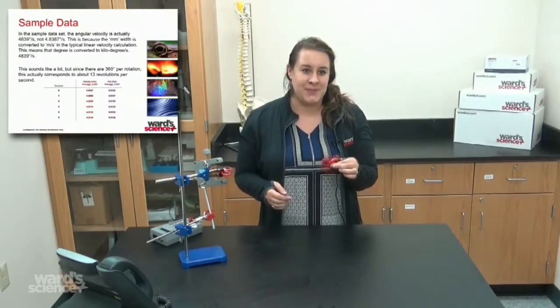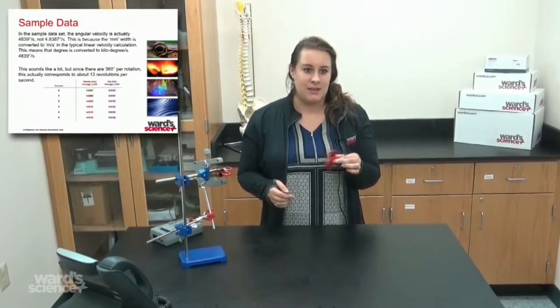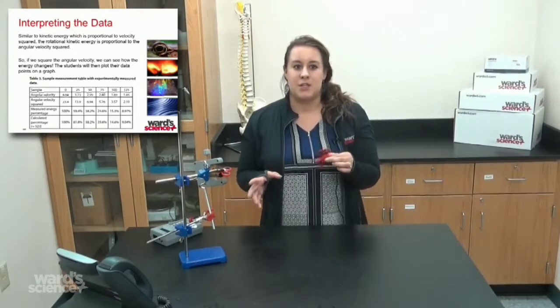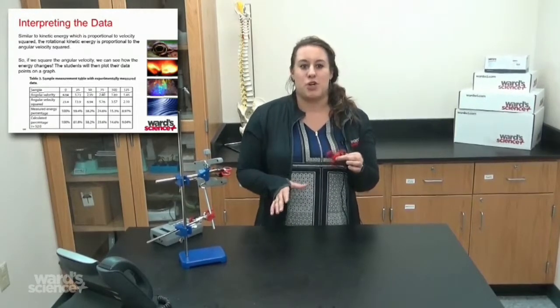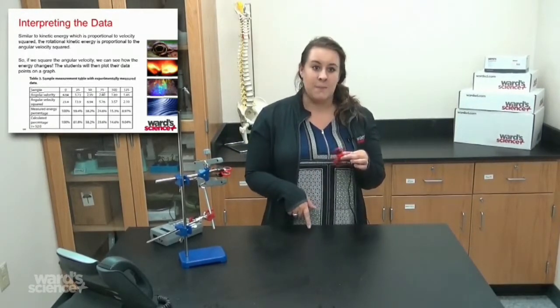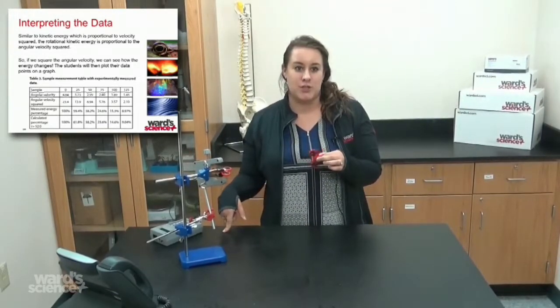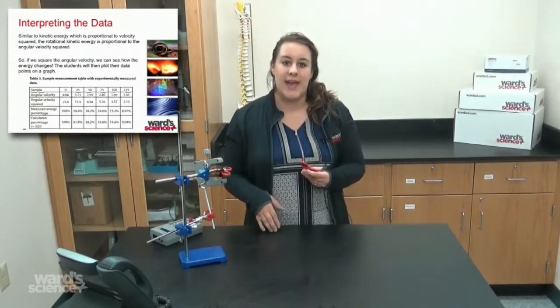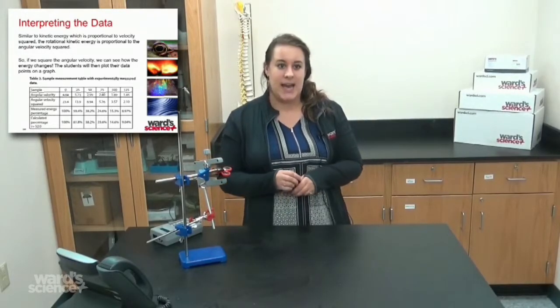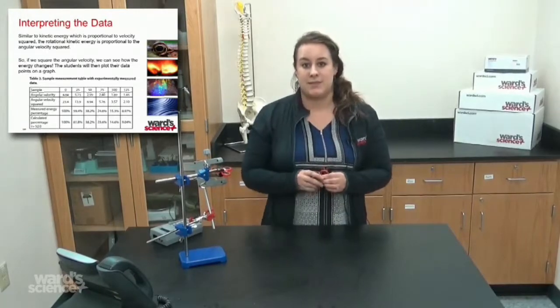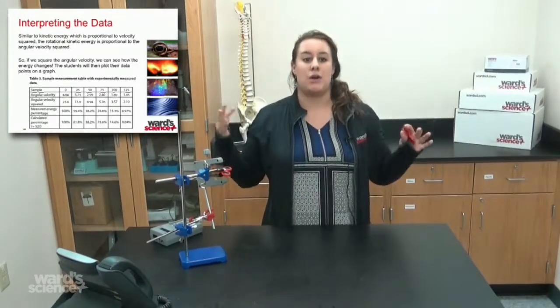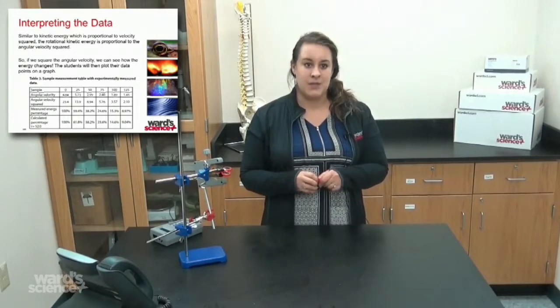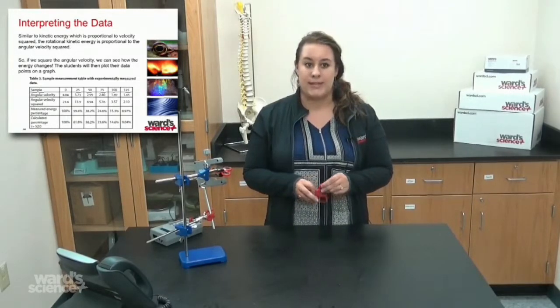We can move on from the sample data now. Interpreting the data: Similar to kinetic energy, which is proportional to velocity squared, rotational kinetic energy is proportional to the angular velocity squared. If we square the angular velocity, we can see how the energy changes. There is some sample data—they're all flushed out and all the buckets are filled with data. The students will then plot their data points on a graph.